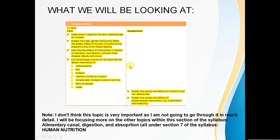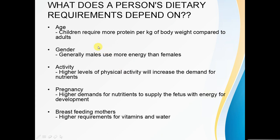So first of all, you need to be asking yourself: what does a person's dietary requirement depend upon? First of all, age. Children require more protein per kilogram of body weight compared to adults. That makes sense because children require energy to grow and develop. It doesn't mean they take in more food or more protein overall — it just means that compared to their body weight, they require higher proportions of protein than adults.